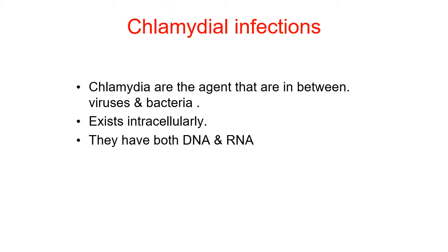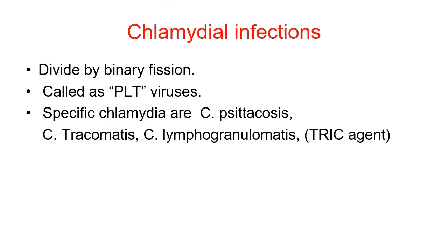Chlamydia are obligate intracellular and filterable, and like bacteria they contain both DNA and RNA and divide by binary fission. Chlamydia combinedly form the PLT group — that is Chlamydia psittaci, Chlamydia trachomatis, and lymphogranuloma venereum, which is called the TRIC agent.